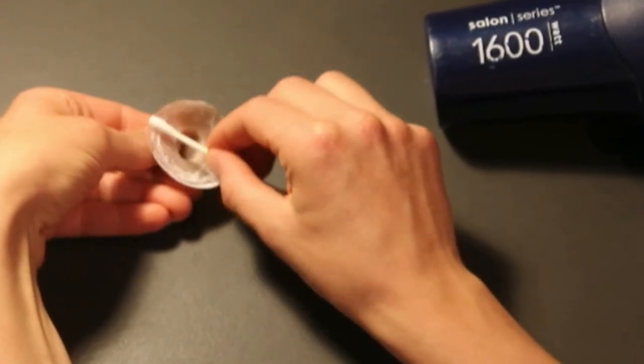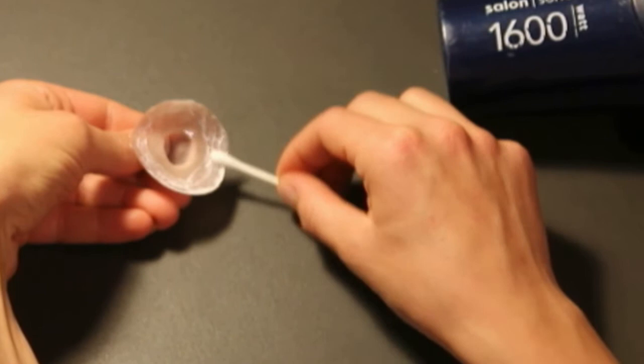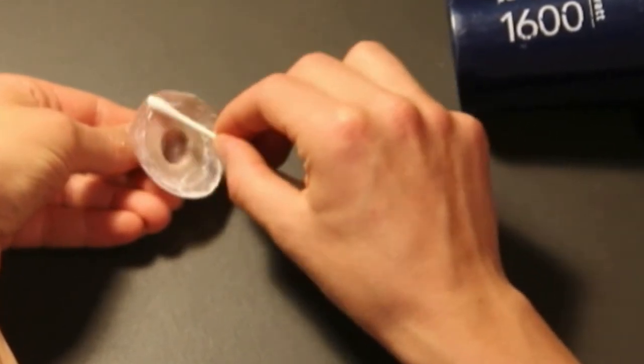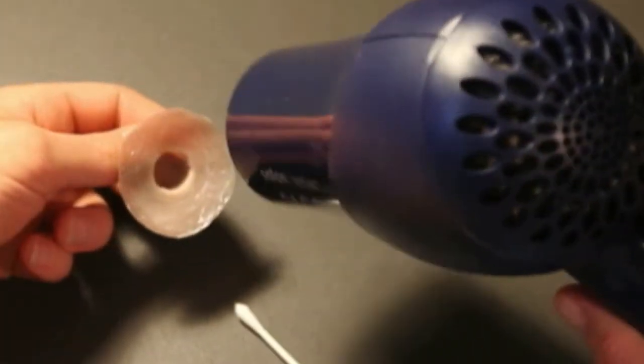The prosthesis is ready to apply when the appearance of the adhesive changes from white to clear. Using a hair dryer will greatly speed this process.